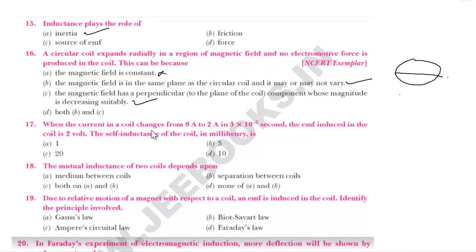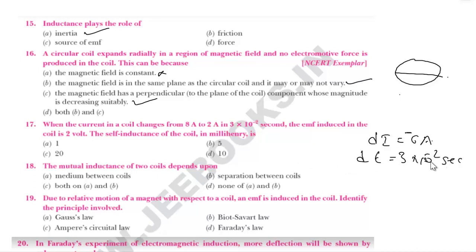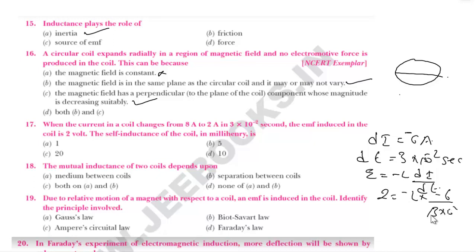When a current in a coil changes from 8 ampere to 2 ampere in 3×10⁻² seconds. Change in current ΔI equals −6 ampere, ΔT equals 3×10⁻² seconds. EMF is 2 volt. Using E = −L(ΔI/ΔT): 2 = L × 6 / 3×10⁻², giving L = 10⁻² henry.